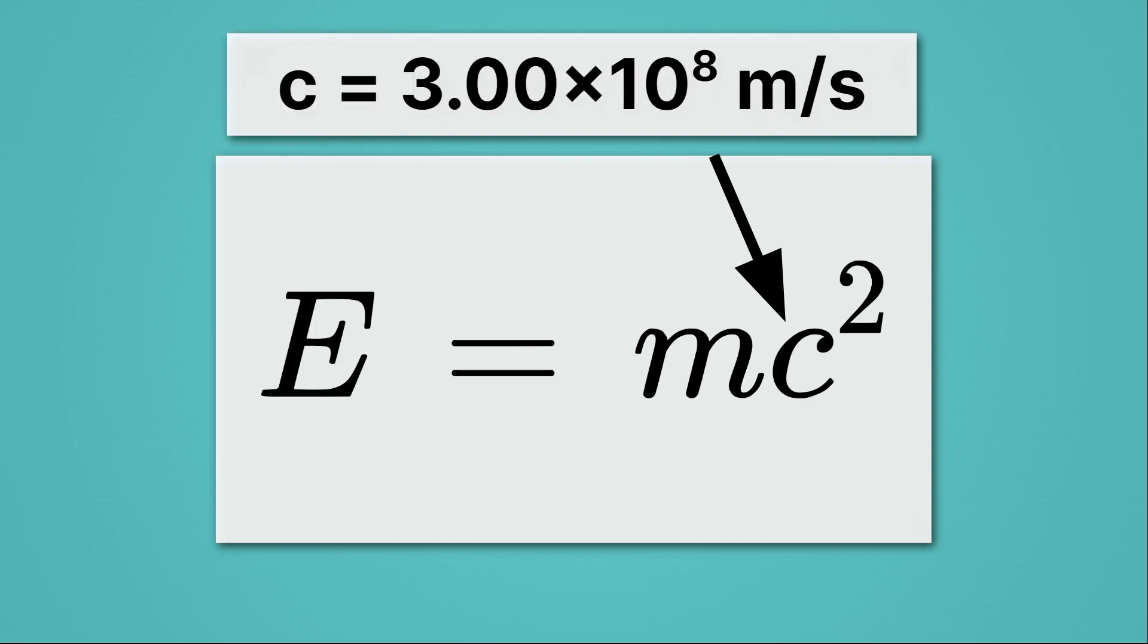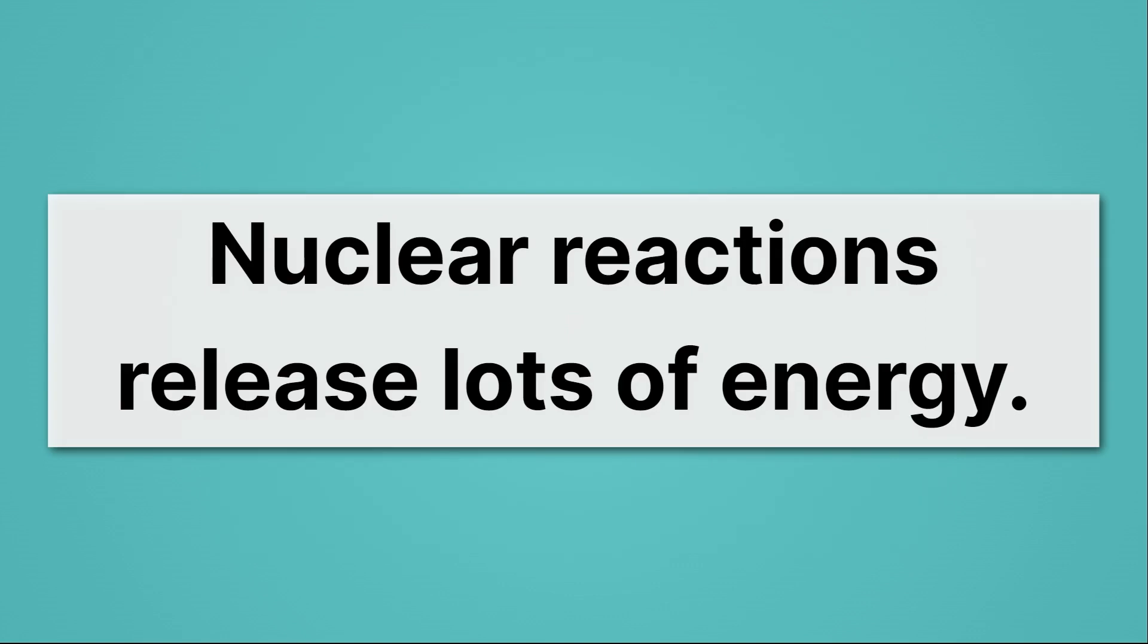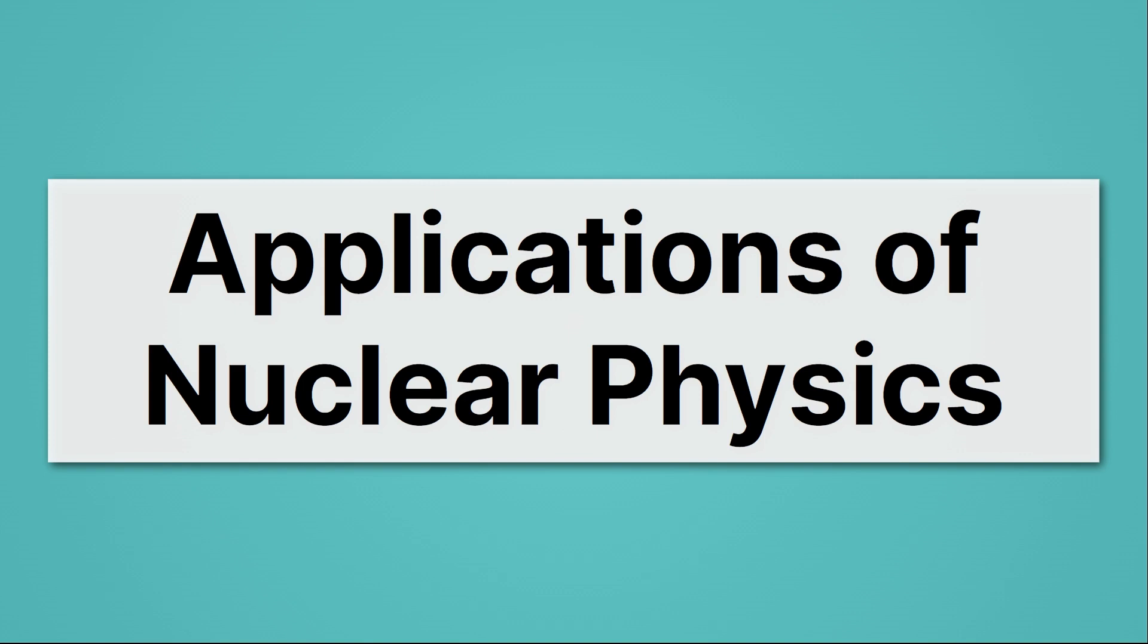We take the mass decrease and we multiply it by the speed of light squared. Now remember the speed of light is an enormous number, 3.00 times 10 to the 8th, or 300 million. So square that number and multiply by mass and we get the energy. That energy gets really big really fast. Nuclear reactions release lots of energy. That really leads us right into the applications of nuclear physics, which are all about the release of large quantities of energy.